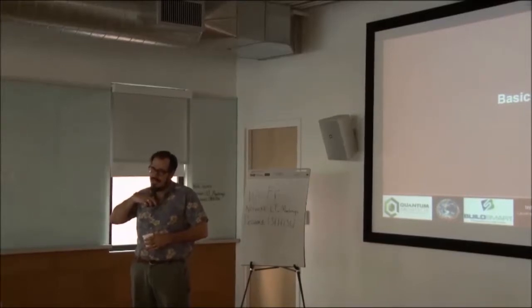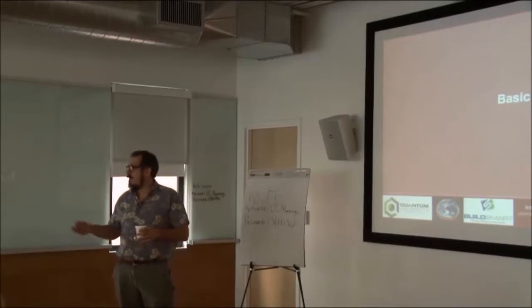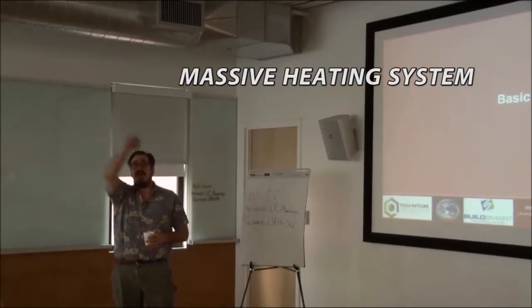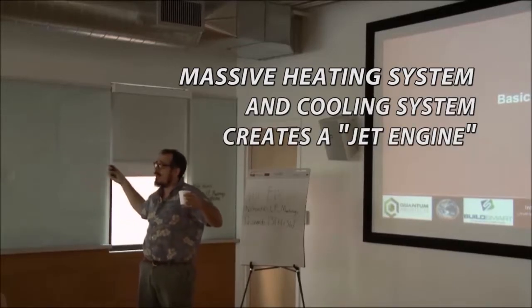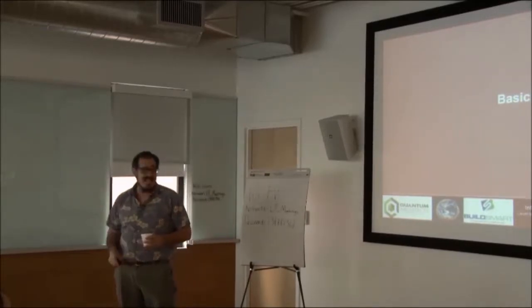But if we're being reasonably traditional in our approach to construction, what we do is we build a really poor envelope and then we put a big massive heating system like this one in and cooling system. We got this big jet engine so we can rely on our mechanical system to dry out our mistakes.